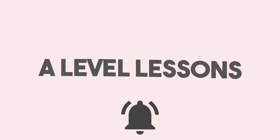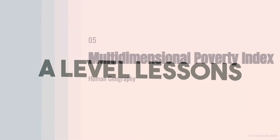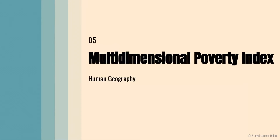Welcome to Level Lessons Online. We're moving on to the next part of Human Geography — Team 2.1. We're going to be looking at your next development indicator: the Multi-Dimensional Poverty Index.